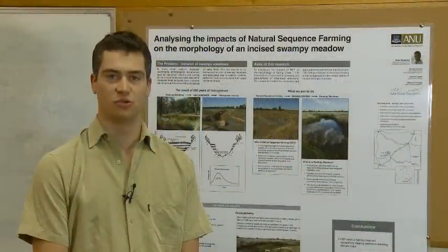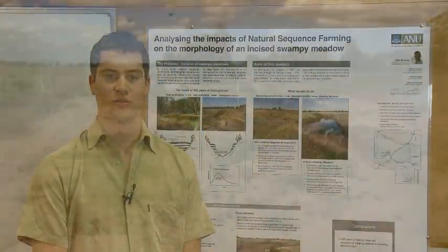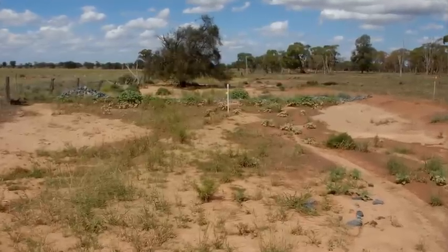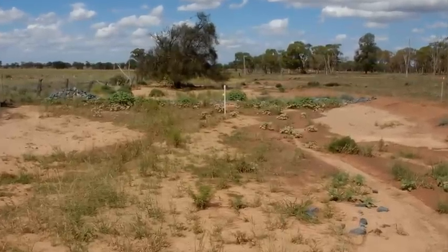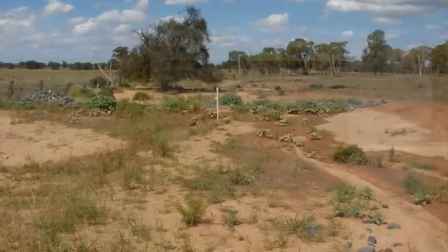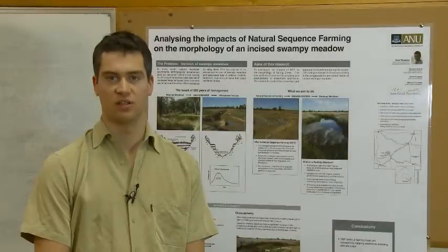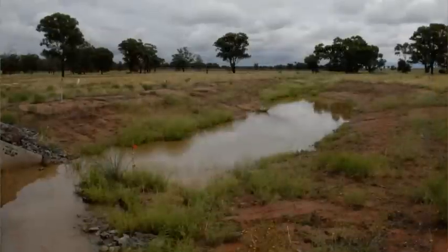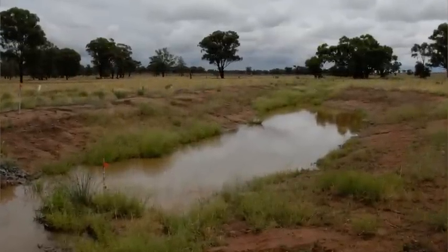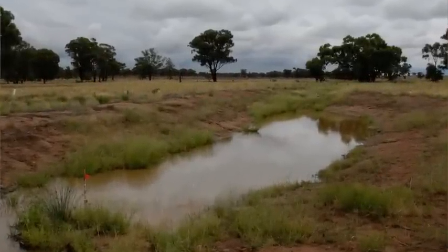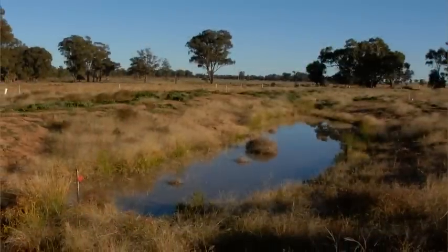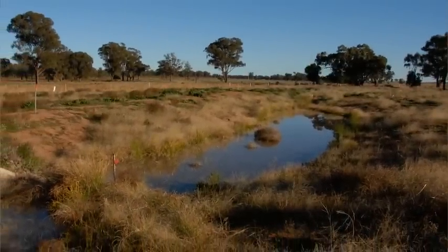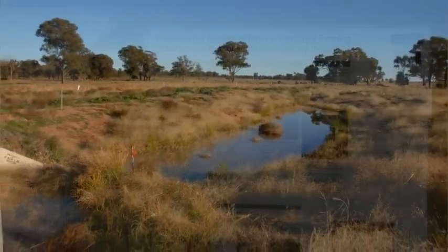The weirs installed in Spring Creek are trapping silts and clays, which is indicative of the low energy environments forming behind these structures. By inducing low energy environments throughout Spring Creek, we can encourage the growth of vegetation and the aggregation of sediments, and by doing so raise the level of Spring Creek back towards the level of the former floodplain.